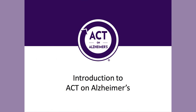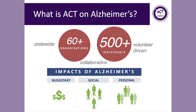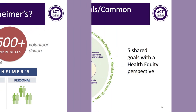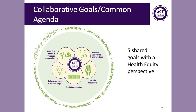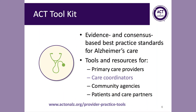We're going to start with an introduction to ACT on Alzheimer's. ACT on Alzheimer's is a statewide volunteer-driven collaboration that involves over 60 public and private organizations and hundreds of people working together to create supportive communities for people living with dementia and caregivers. It is the group charged with implementing Minnesota's state plan on Alzheimer's disease. ACT on Alzheimer's has five shared goals with a health equity perspective, including identifying and investing in promising approaches, raising awareness and reducing stigma, equipping communities, sustaining caregivers, and increasing detection and improving care. Today we're going to focus on increasing detection and improving care.